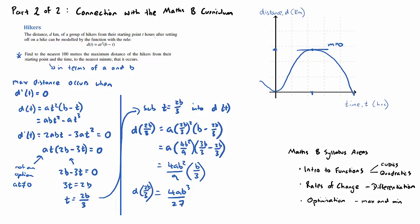Just a brief recap on that question: we had hikers that set off from home base and their distance away from the starting point can be modelled by this cubic function here, which is the distance function. We were asked in the question to show in terms of A and B, which are two unknown variables, a description of the maximum distance away from the starting point. And we got to that point down here, this term here, 4AB cubed on 27.